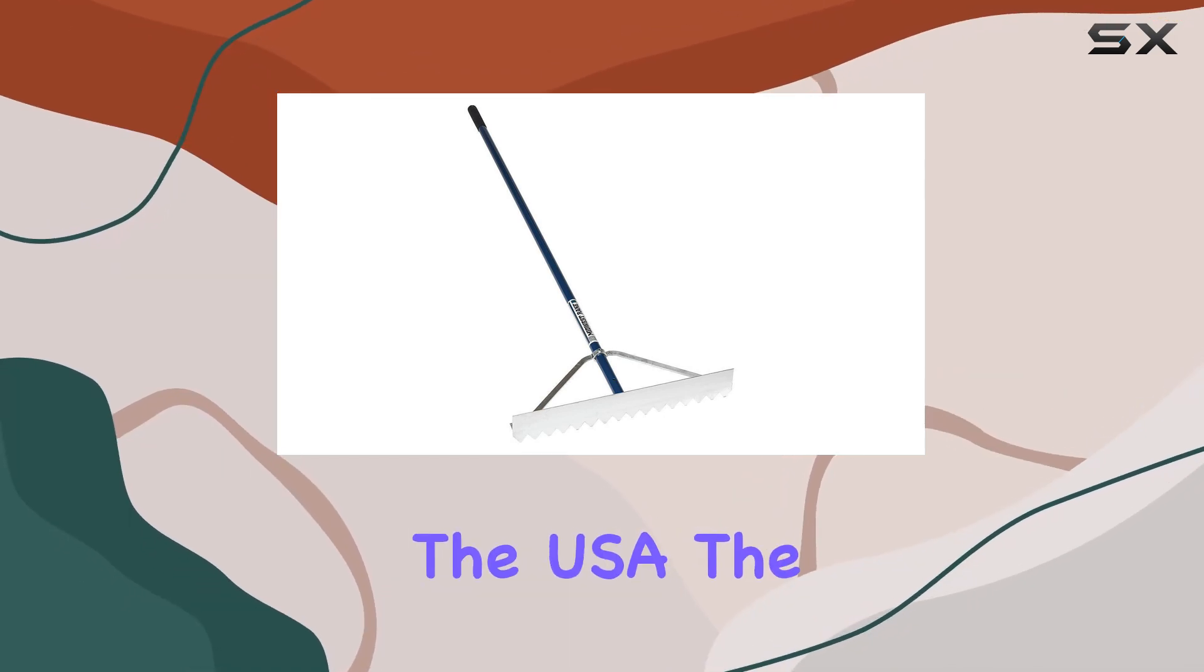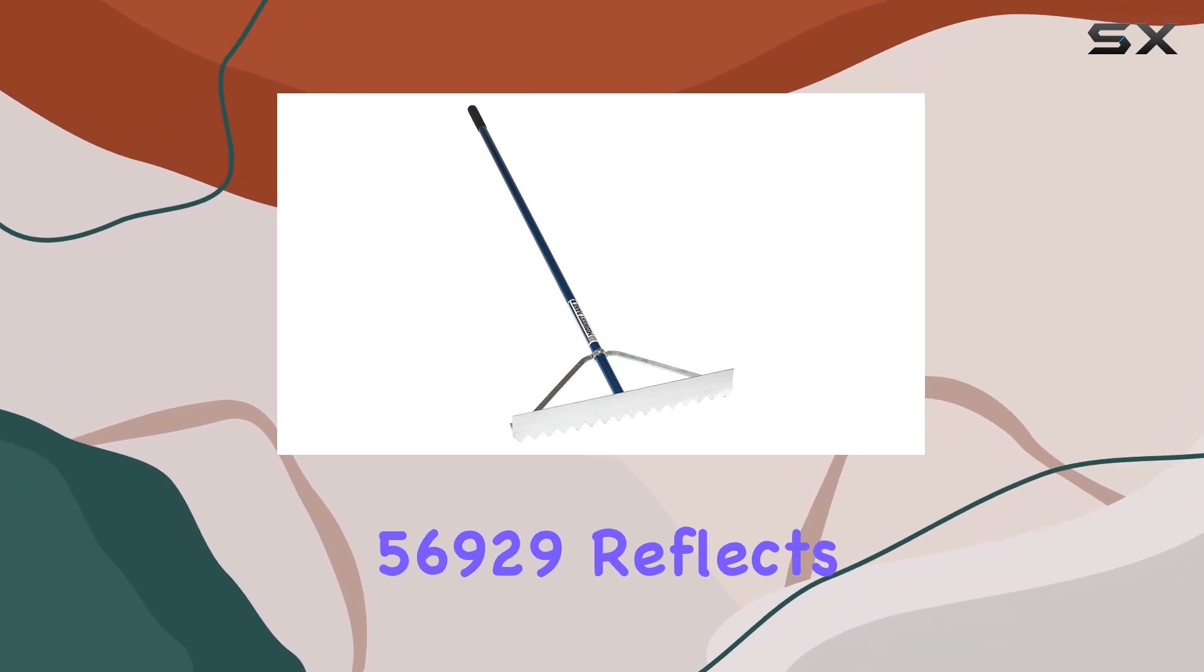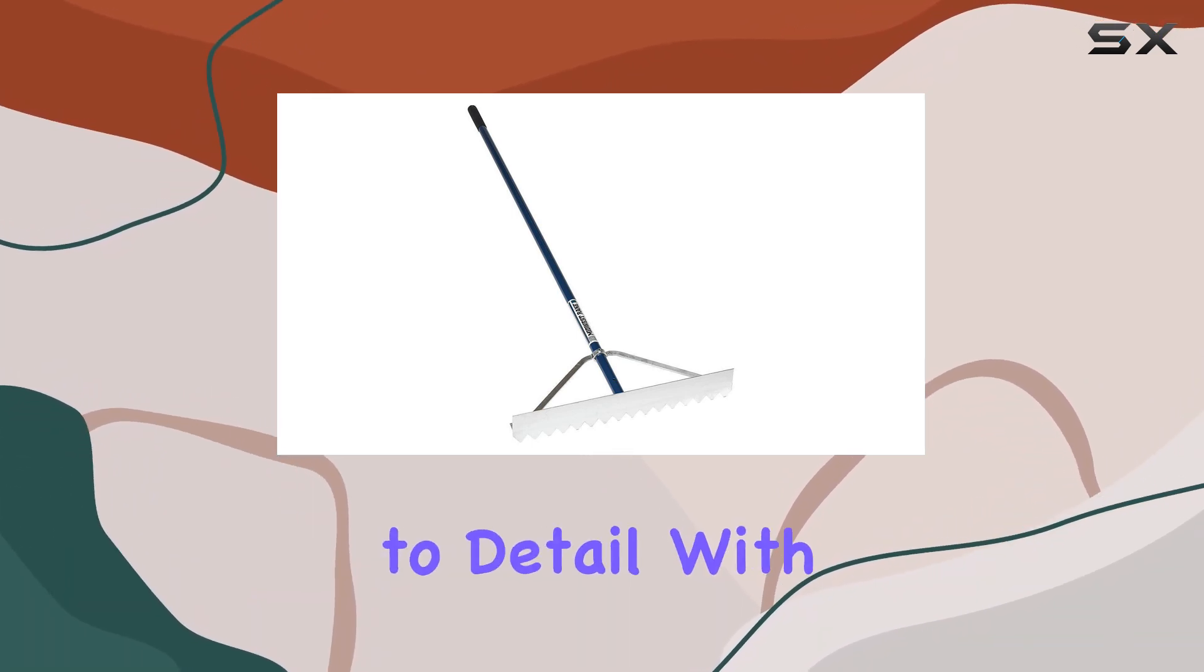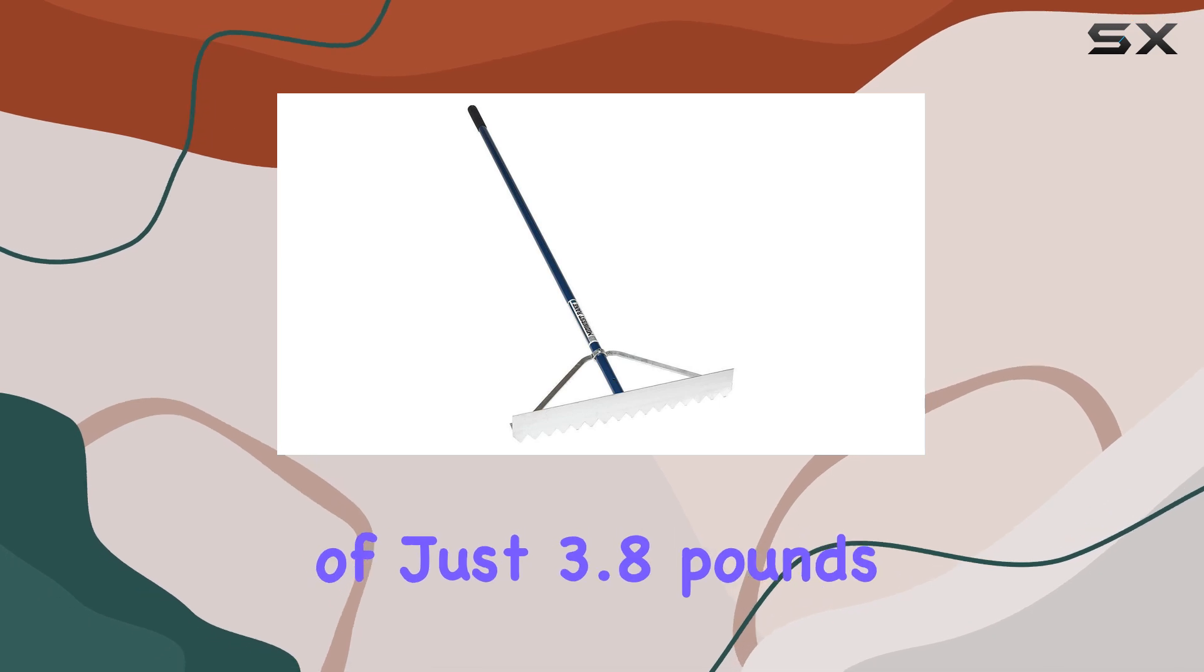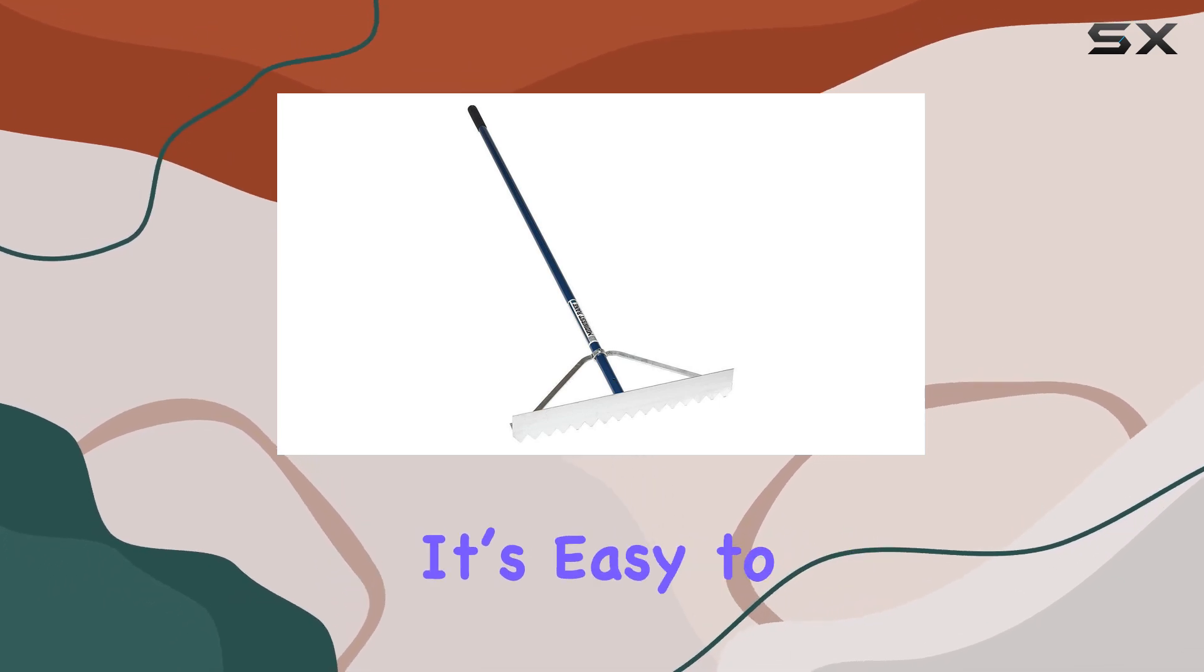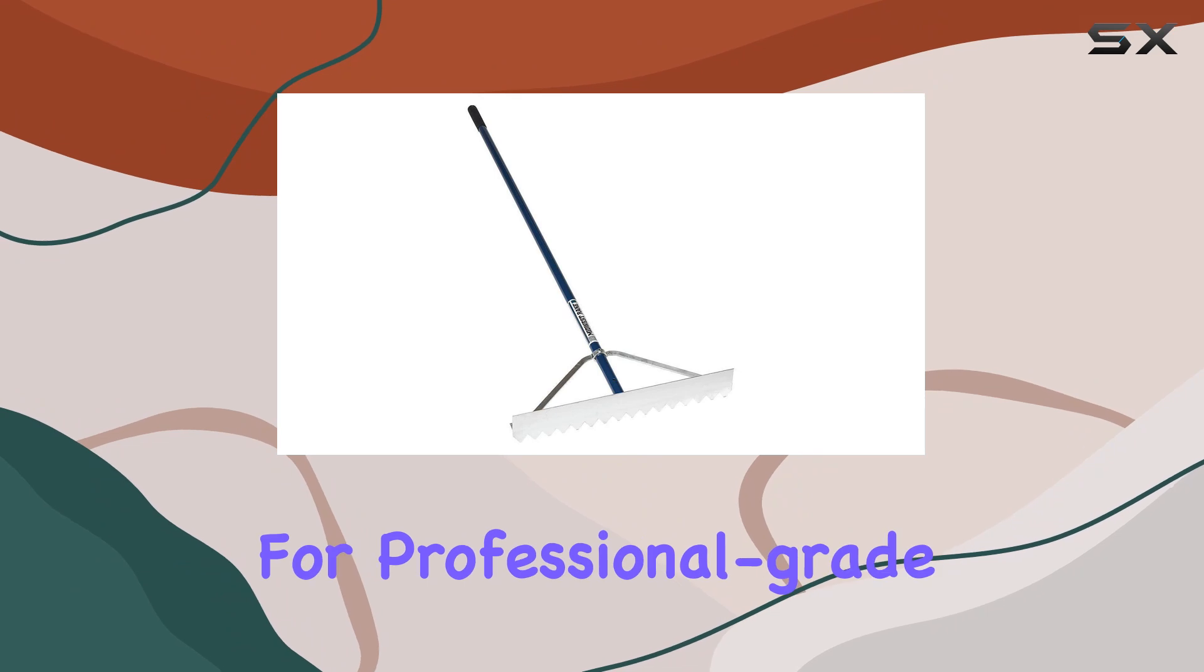Made in the USA, the Midwest Rake 56929 reflects high-quality craftsmanship and attention to detail. With a total weight of just 3.8 pounds, it's easy to handle while still being sturdy enough for professional-grade work.